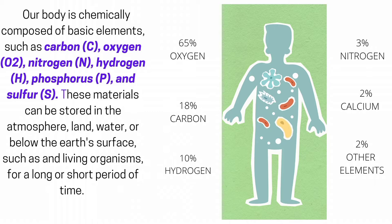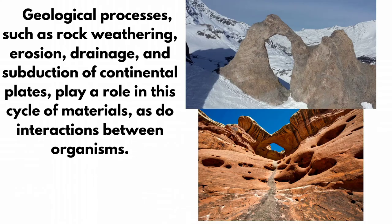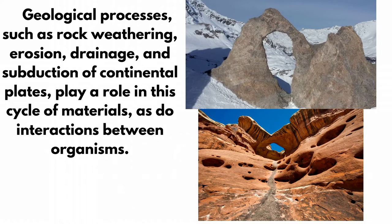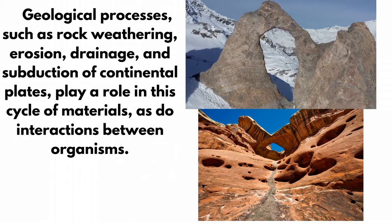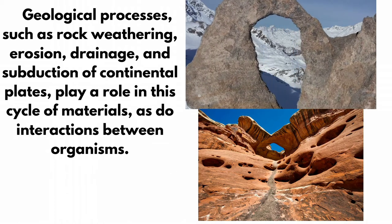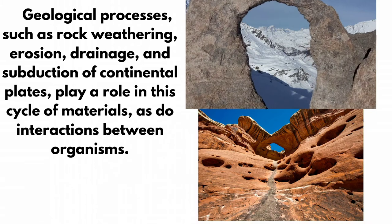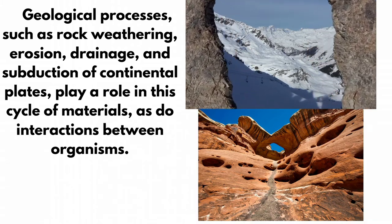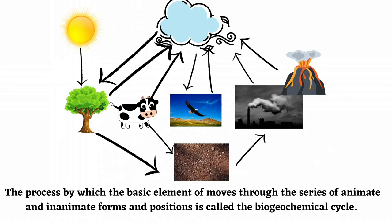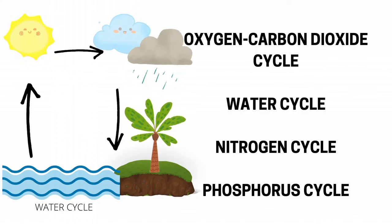These materials can be stored in the atmosphere, land, water, or below the Earth's surface, such as in living organisms, for a long or short period of time. Geological processes, such as rock weathering, erosion, drainage, and subduction of continental plates, play a role in this cycle of materials, as do interactions between organisms. The process by which the basic elements move through a series of animate and inanimate forms is called the biogeochemical cycle.